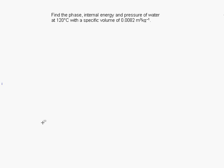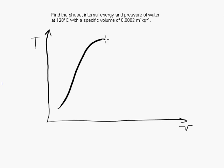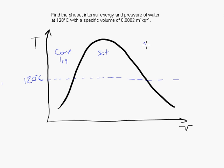Let's draw a TV diagram which we can fill in as we go along. I'll draw in the saturation dome on that. And let's fill in the bits of information that we have. We've got a known temperature, 120 Celsius. We have a known specific volume, but we can't really say where that is on the diagram just yet. We need to find out first of all which phase we're in. Are we compressed liquid, are we in the saturation region, or are we superheated vapor?